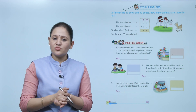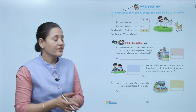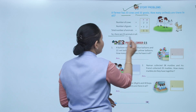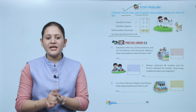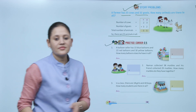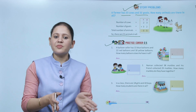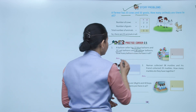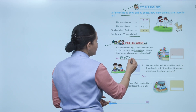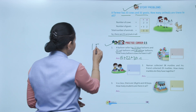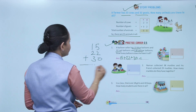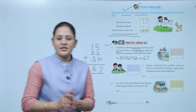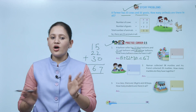Story problems: A farmer has 23 cows and 32 goats. How many animals are there in all? We add 23 plus 32, which equals 55 animals. Practice corner 2.5: A balloon seller has 15 blue, 22 red, and 30 yellow balloons. How many balloons in all? We add 15 plus 22 plus 30 — ones: 5 plus 2 is 7; tens: 1 plus 2 plus 3 is 6. Total: 67 balloons.